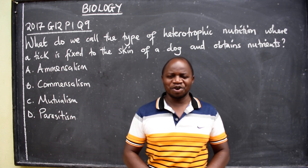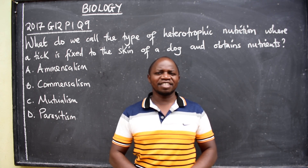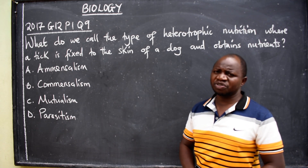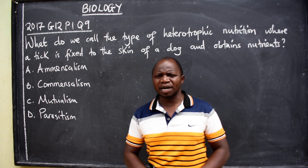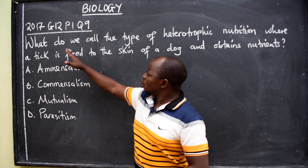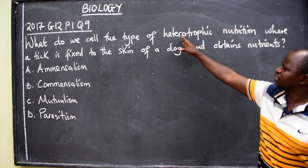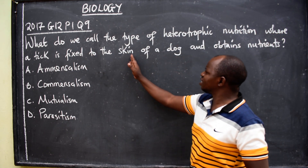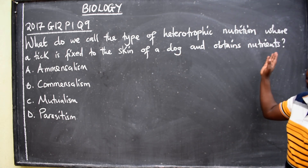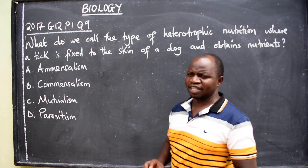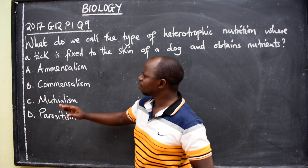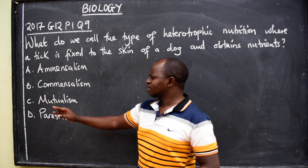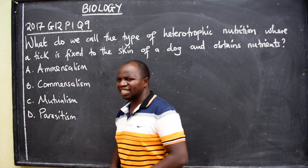Hello learners, hope you are well. This is biology. In this lesson we want to look at a question from 2017 grade 12 paper 1, question number 9. The question: what do we call the type of heterotrophic nutrition where a tick is fixed to the skin of a dog and obtains nutrients? Options: A) amensalism, B) commensalism, C) mutualism, D) parasitism.